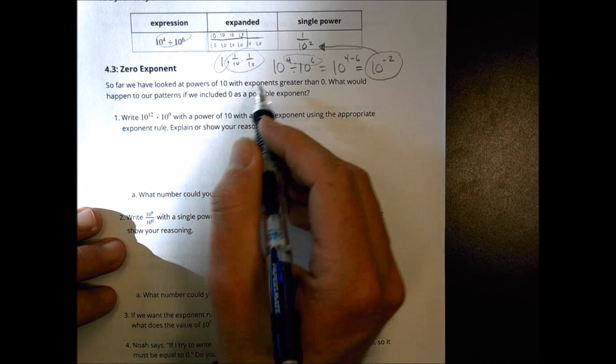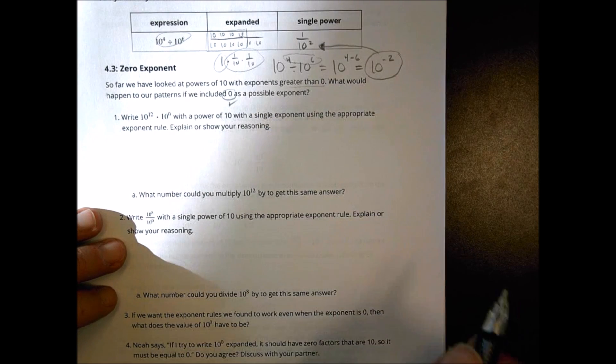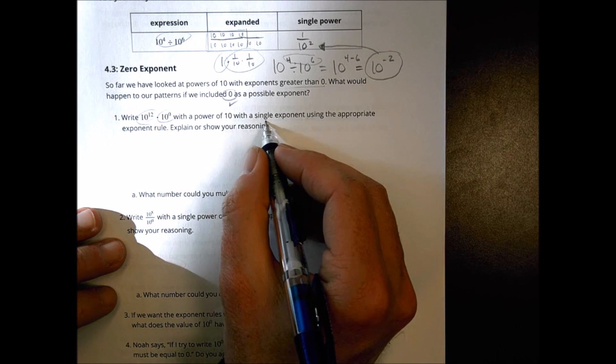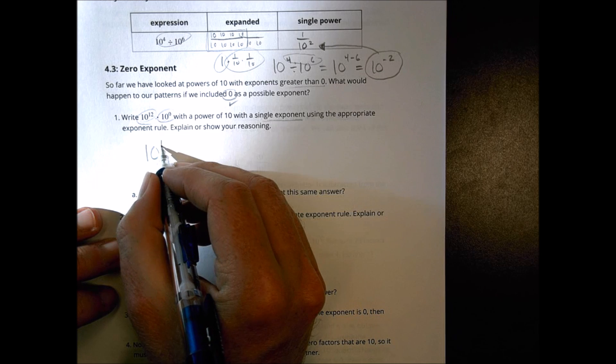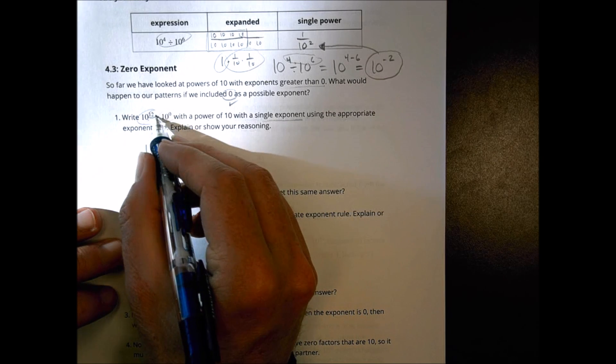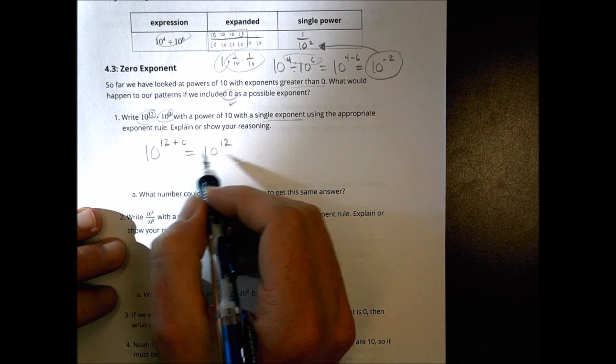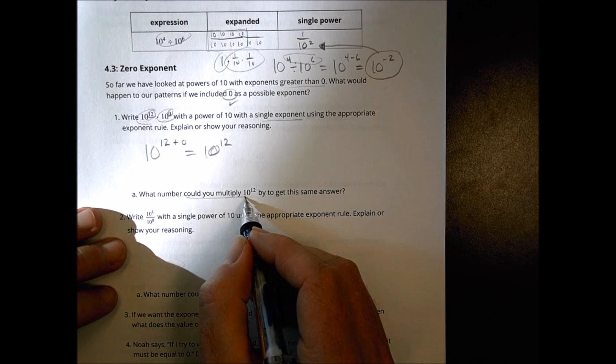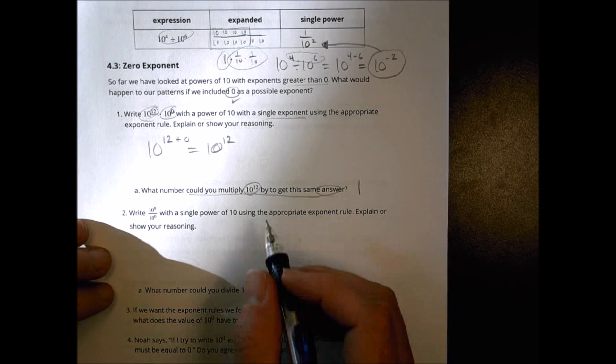Okay, so so far I've looked at powers of ten with exponents greater than zero. What would happen to our patterns if we included zero as a possible exponent? We've talked a little bit about this already, but here we go some more. Write ten to the twelfth times ten to the zero for the power of ten with a single exponent using the appropriate exponent rule. Alright, because of the same base, I'm going to multiply. I'm going to add those together. So ten to the twelfth plus the zero, because it's this exponent plus that exponent. So twelve plus zero is twelve. So I didn't get anywhere, did I? So what happens here is that ten to the twelfth times ten to the zero still leaves you with ten to the twelfth. So what number could I multiply by ten to the twelfth to still get ten to the twelfth? That would be one. And because it's one, it's going to tell us something here.